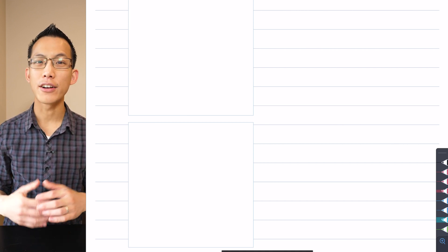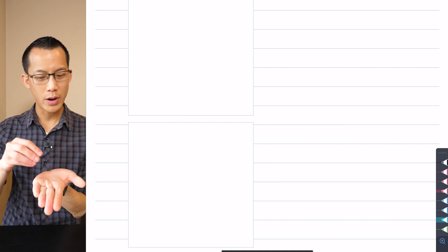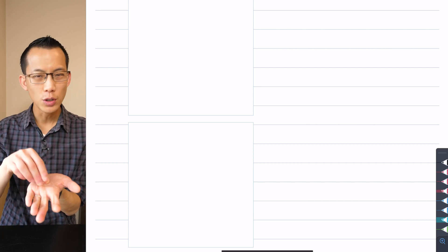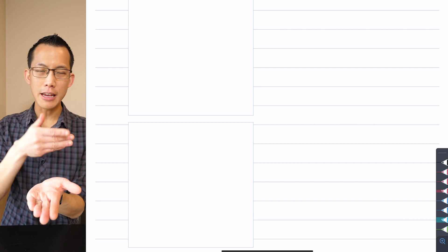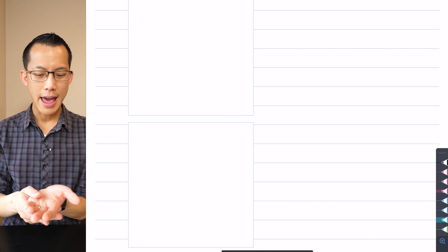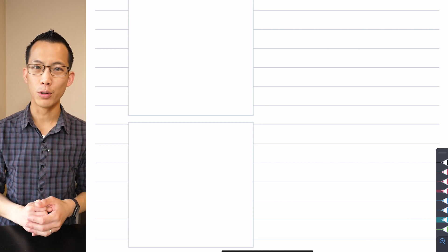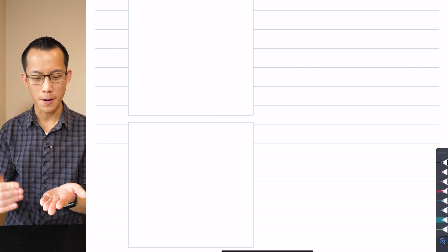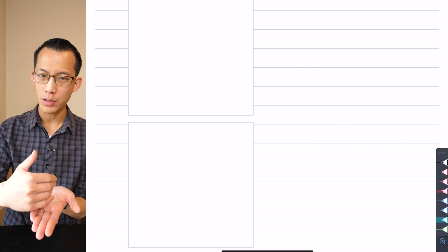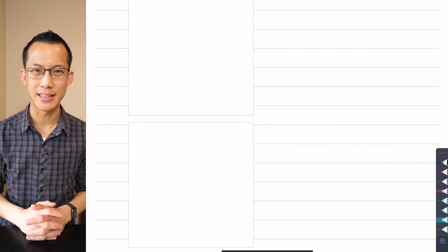So today we're going to have a think about concurrent forces, which is where you've got a single object, a particle, a body, and it's being acted on in multiple different directions. And particularly today, we're going to have a look at objects under equilibrium, so all of the objects' forces are going to sort of balance out nicely with each other.